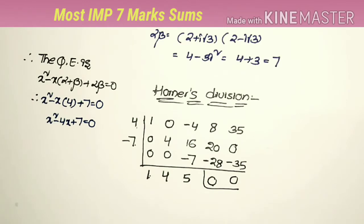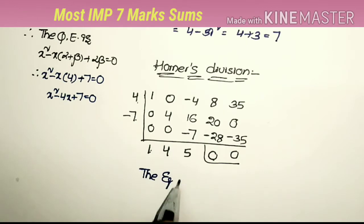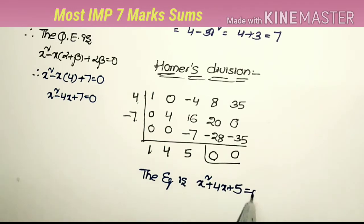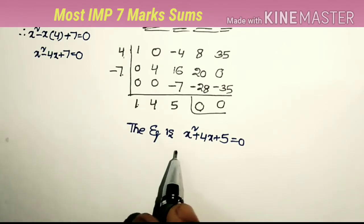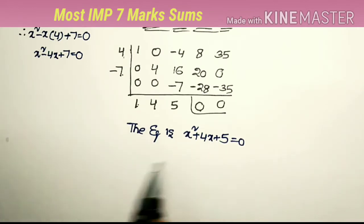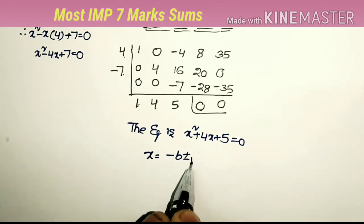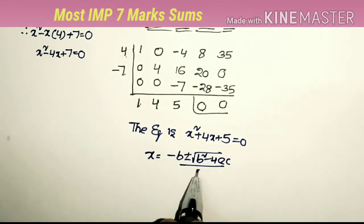Therefore the remaining quadratic equation is x² + 4x + 5 = 0. Since this has no real factors, we apply the quadratic formula: x = (-b ± √(b²-4ac)) / 2a.